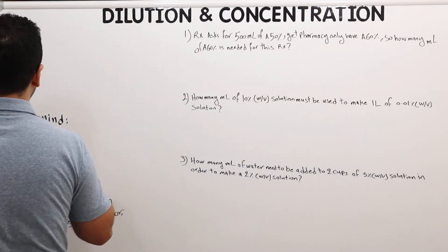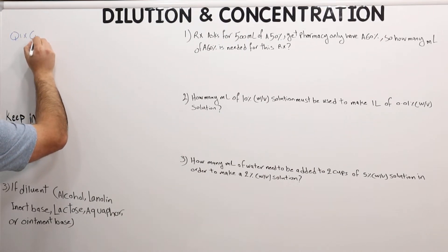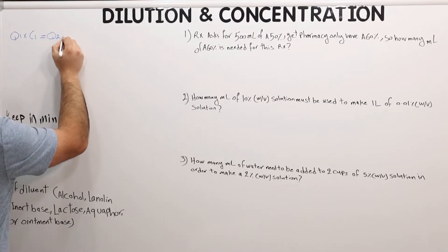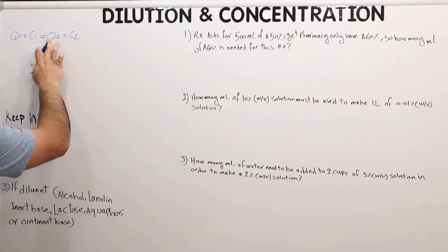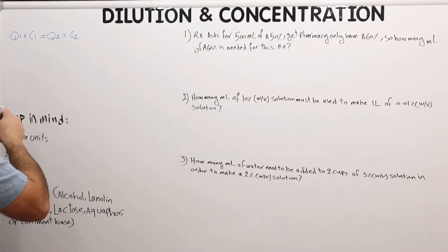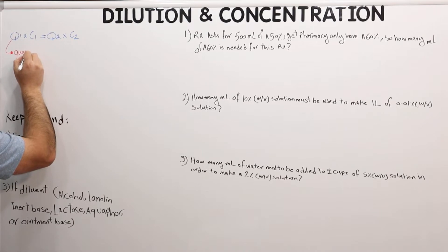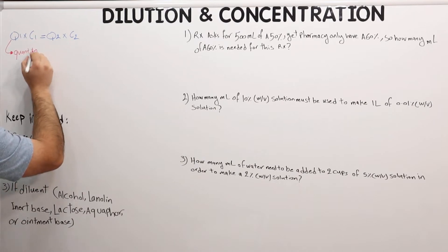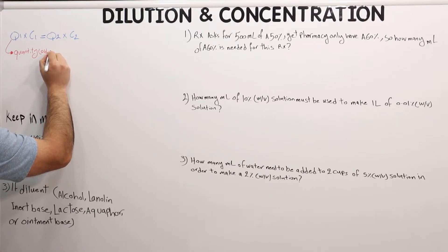The formula is basically Q1 times C1 equals Q2 times C2. Q is basically the quantity — Q1 is the given quantity, the old quantity. Q2 is the new quantity.